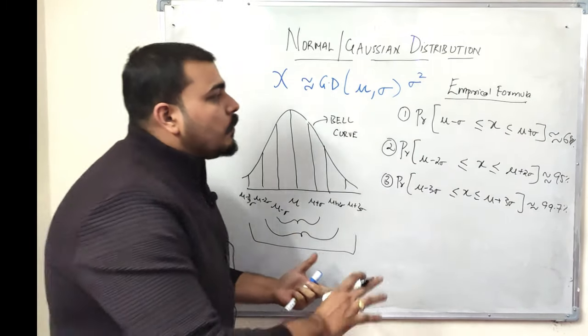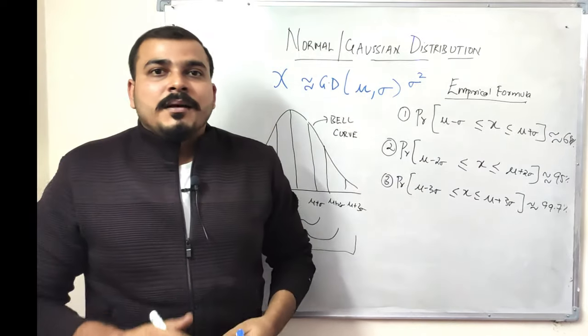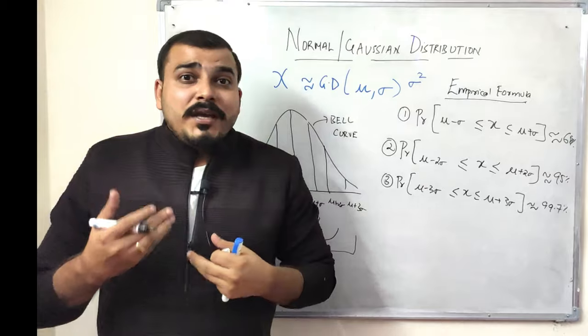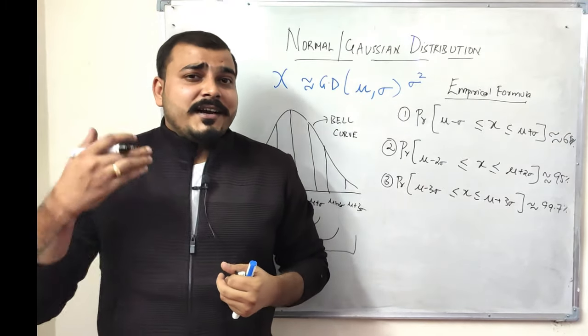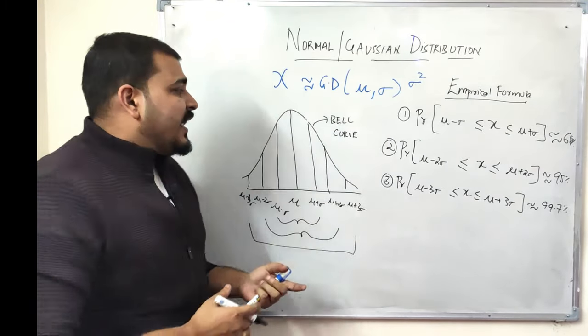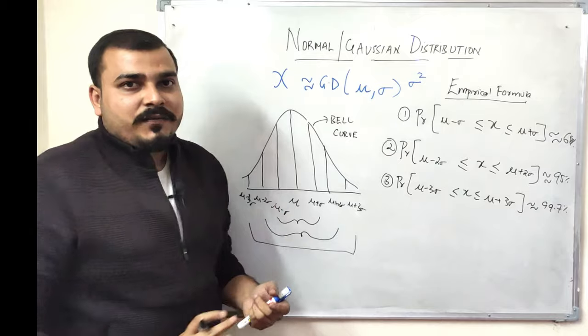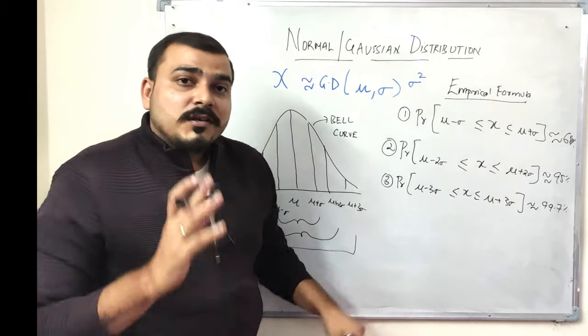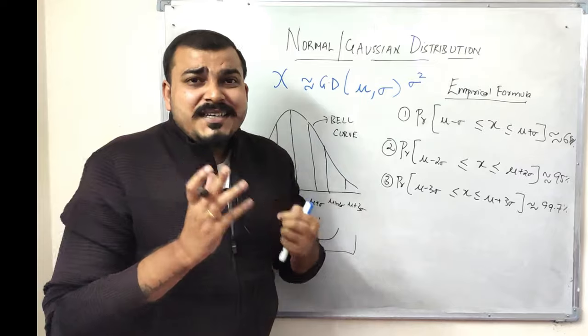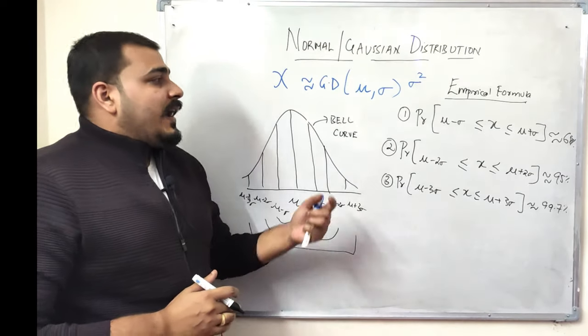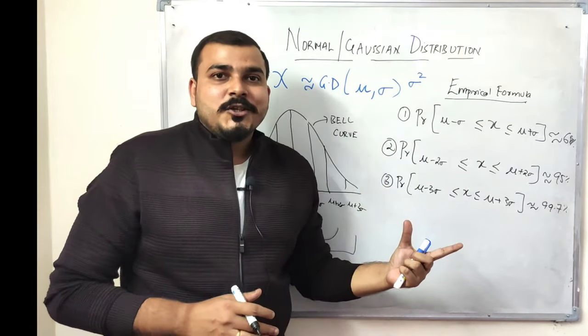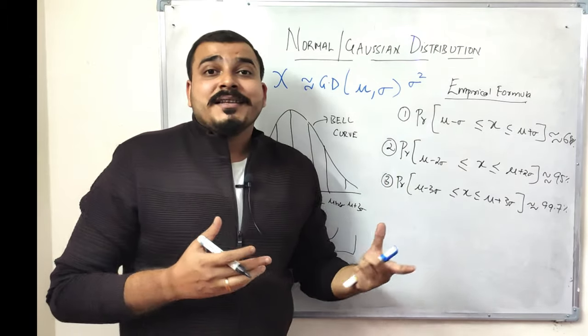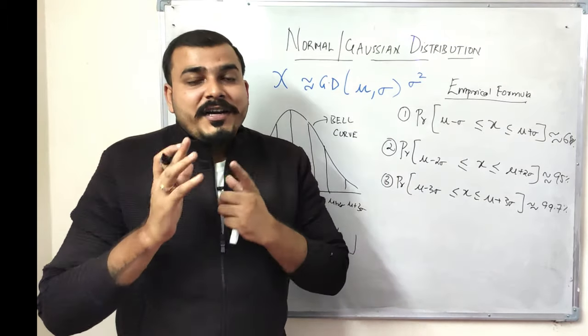This is the most important property because whenever we are considering any data set and when we are doing exploratory data analysis, if we try to plot some of the features it will have this kind of curve. And when it follows this kind of curve, these three properties also get applied to it because it is a Gaussian distribution. With the help of these three things you will understand how we can apply all these particular things while doing exploratory data analysis.